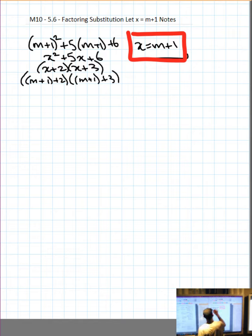Now all those brackets are unnecessary on the inside, so we can scribble them out, but we're going to see in the future why they're going to matter. So 1 plus 2 is 3, so m plus 3. m plus 1 plus 3 is 4, so m plus 4.